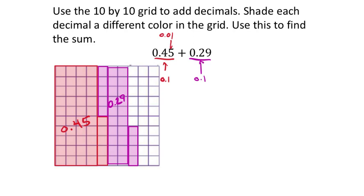Now we can conclude by asking: how many tenths do we have? We can count: 1, 2, 3, 4, 5, 6, 7 full tenths. So I'm going to make that 0.7 — emphasize that decimal. And then we have these extra 4 hundredths: 1, 2, 3, 4. If we add those together, we end up with 74 hundredths.